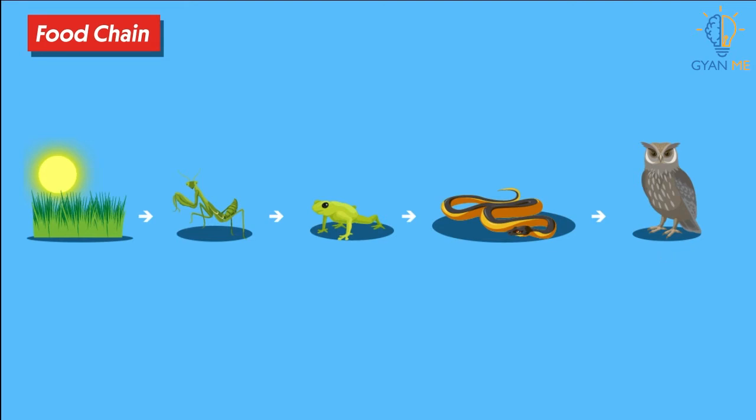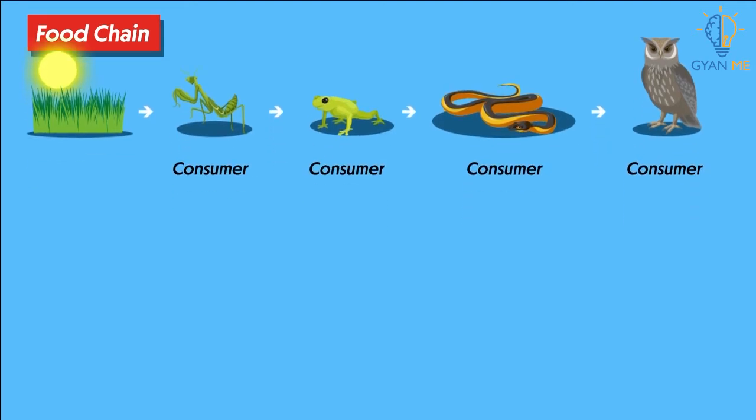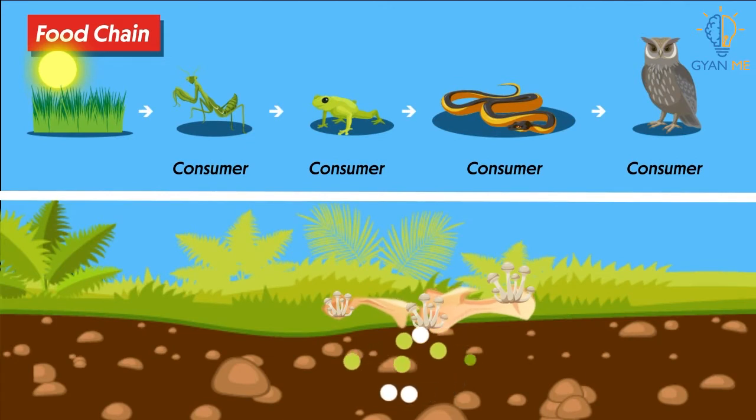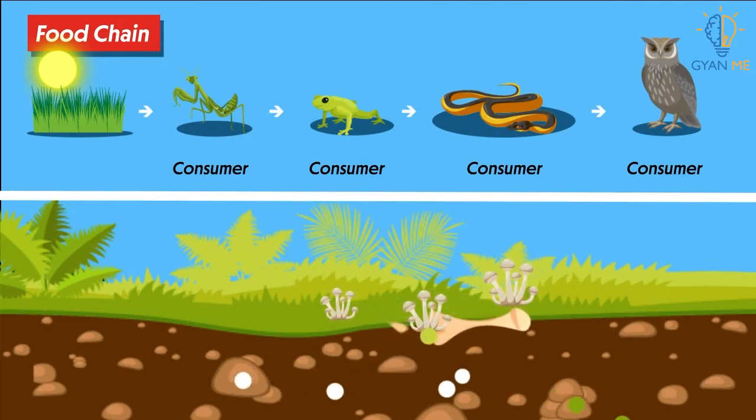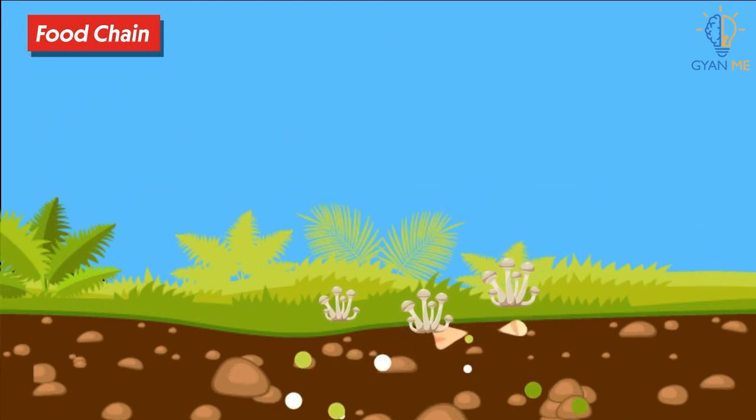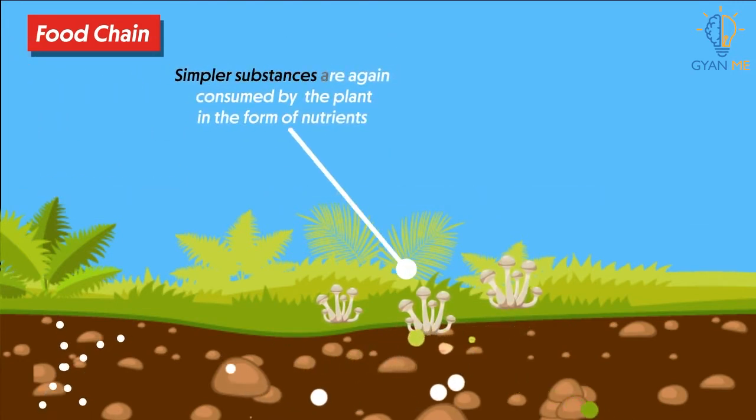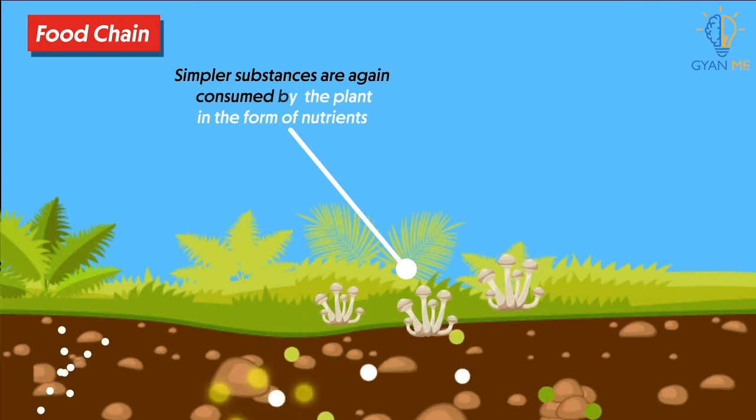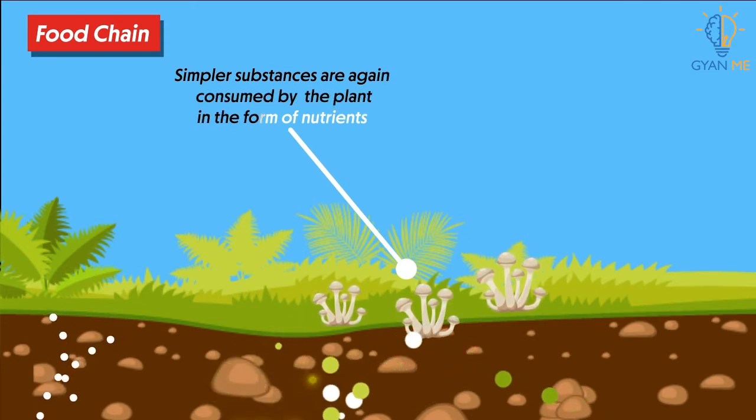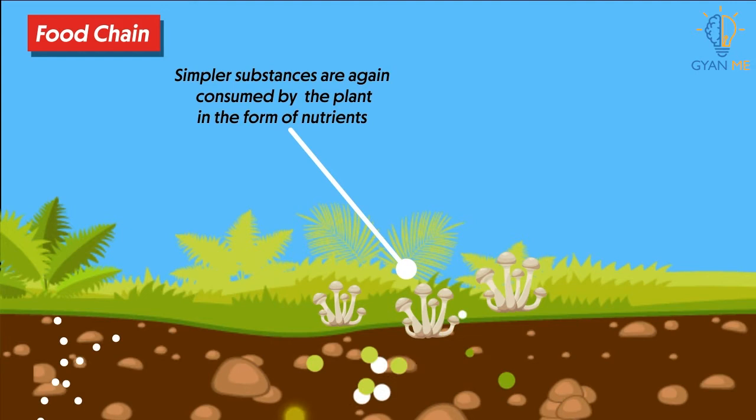When all these consumers die, decomposers decay their body and convert their complex organic matter to simple organic matter and mix it with soil. The simpler substances are again consumed by plants in the form of nutrients from the soil and the chain continues.